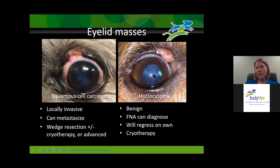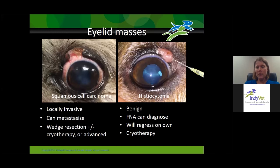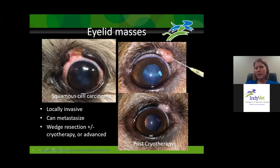Histiocytomas are benign eyelid masses we can often see in younger dogs. They'll regress on their own, but before they regress they can get ulcerated and look worrisome to the owner. You can treat with cryotherapy to make them resolve faster, or diagnose with a fine needle aspirate. When doing a fine needle aspirate around the eye, never direct the needle toward the eyeball — direct it parallel to the eyelid margin so that if the dog moves, you won't inadvertently puncture the eye. Post-cryotherapy, the area becomes depigmented, which is normal — it will eventually repigment and the eyelid returns to normal.